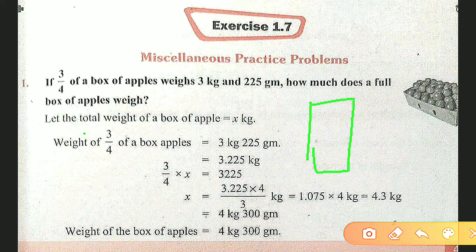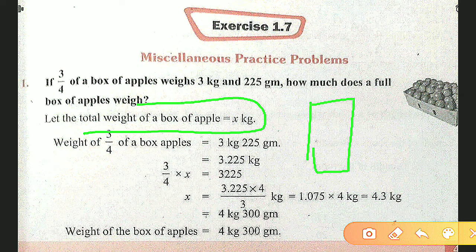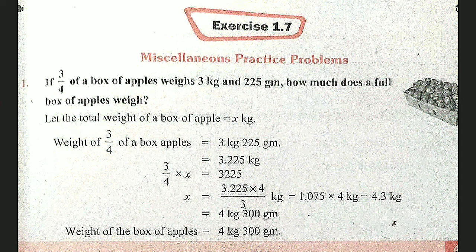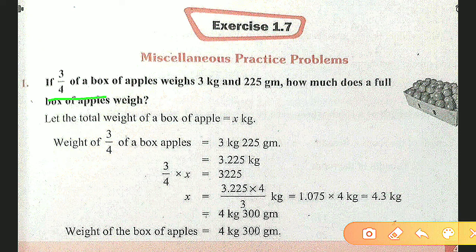So let us take the total weight of the box of apple as x kg, because we don't know and we want to find the full box weight. The given data is 3 by 4 of a box of apple weight is 3 kg 225 g.